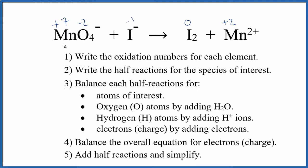Let's balance the redox reaction for MnO4 minus plus I minus gives us I2 plus Mn2 plus. We're going to use the ion electron method and this is an acidic medium. So the first thing we do is write the oxidation numbers for each element. I've already done that; if you need help writing oxidation numbers, there's a link at the end of this video and in the description.